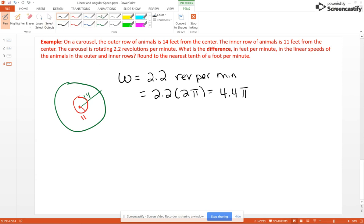So what we need to do for our outer, our outer has a radius of 14 feet, and so the linear speed, how about we'll call that V-O for the outer, is going to be 14 times 4.4, which is 61.6 pi. We will not take it even further than that right now in decimals.